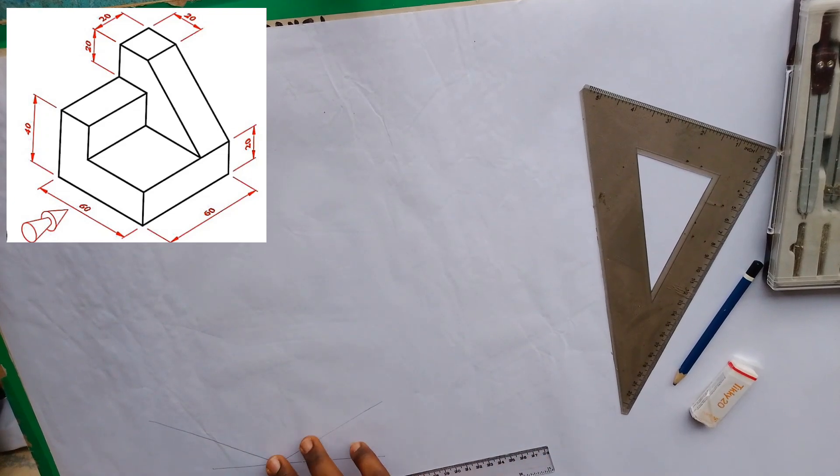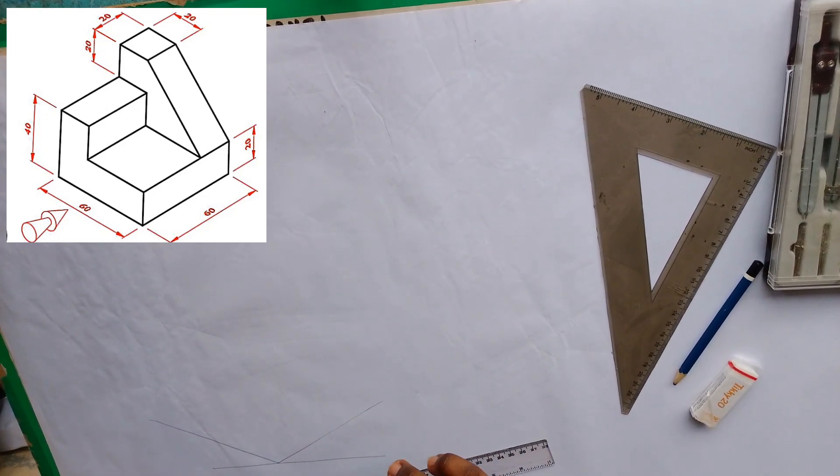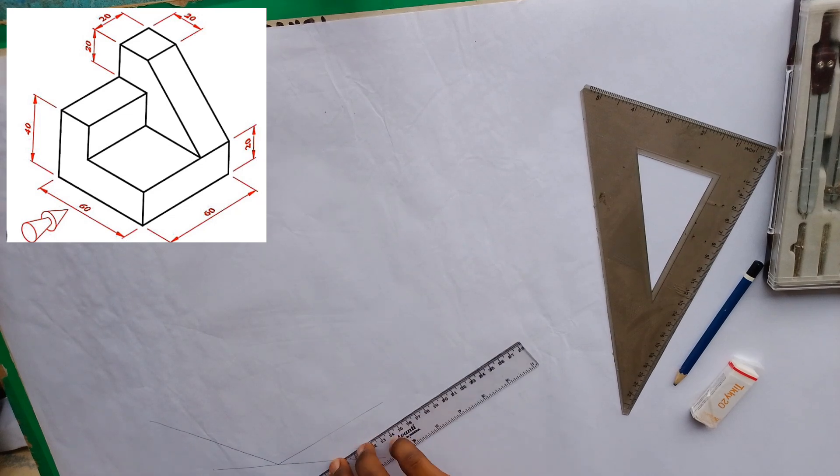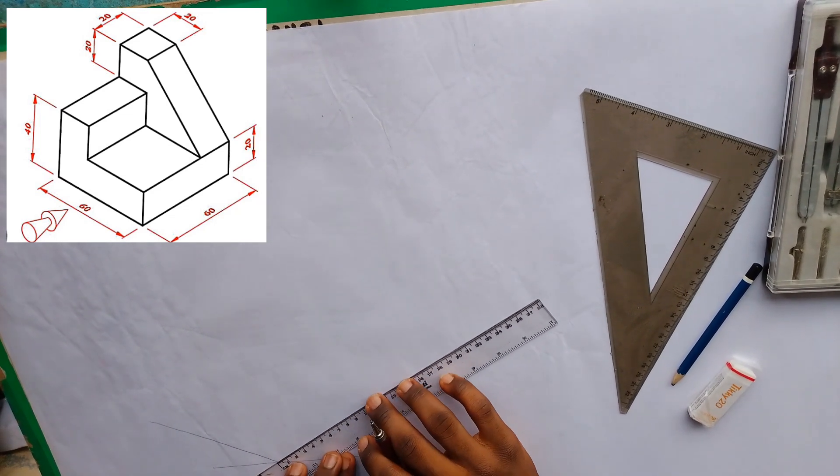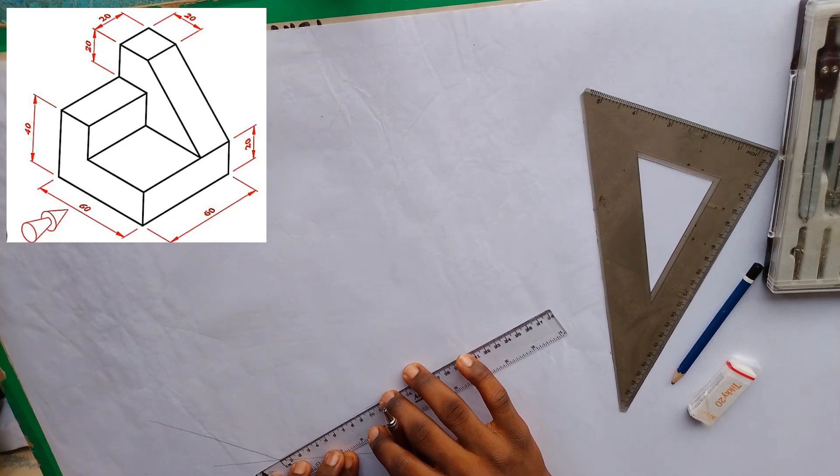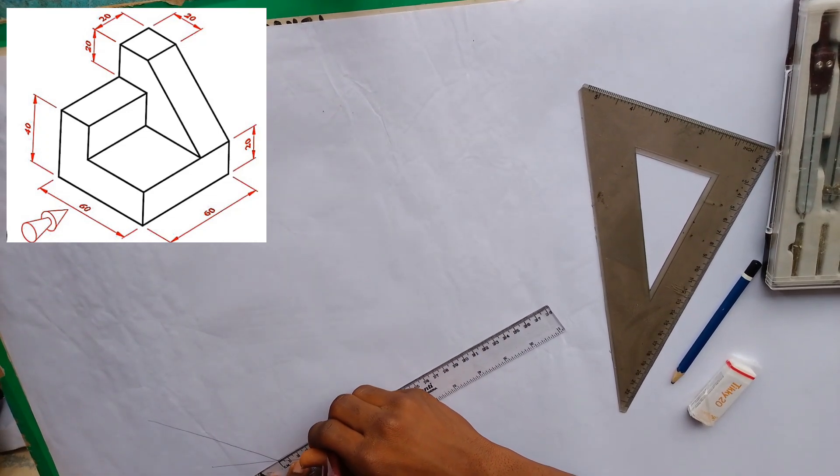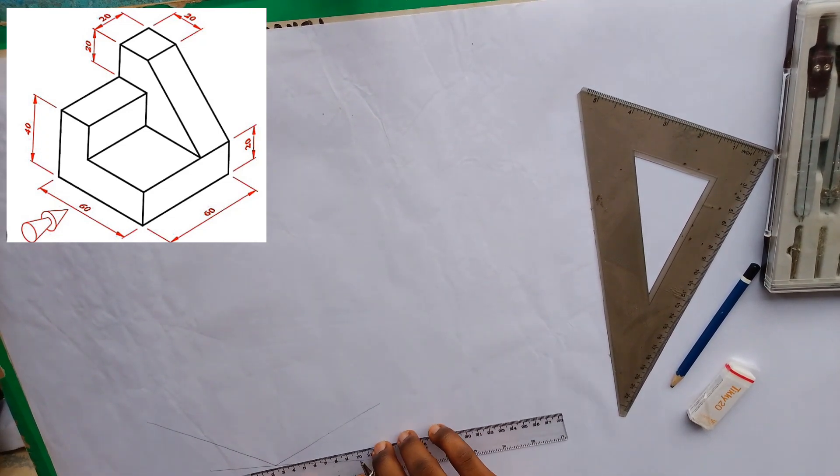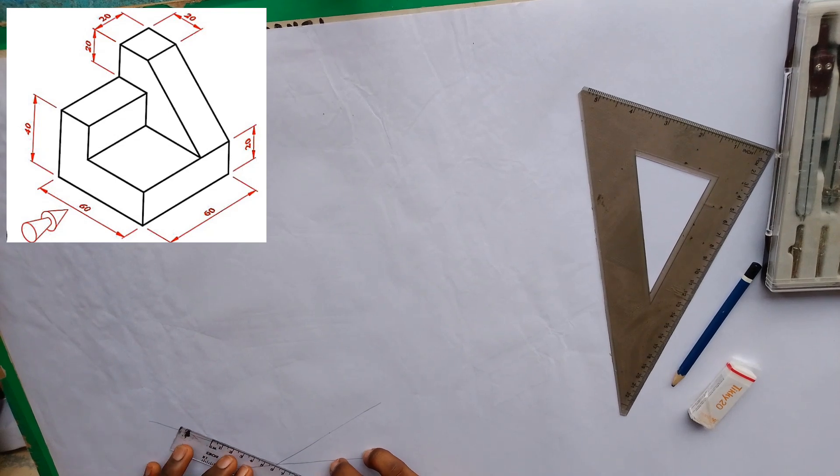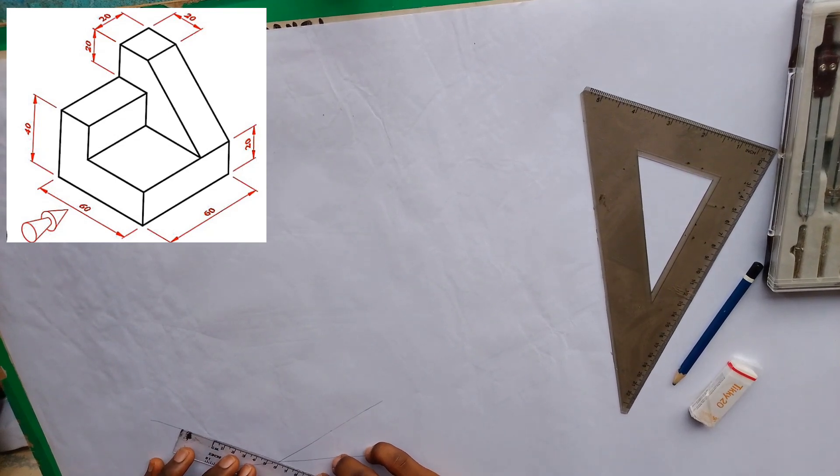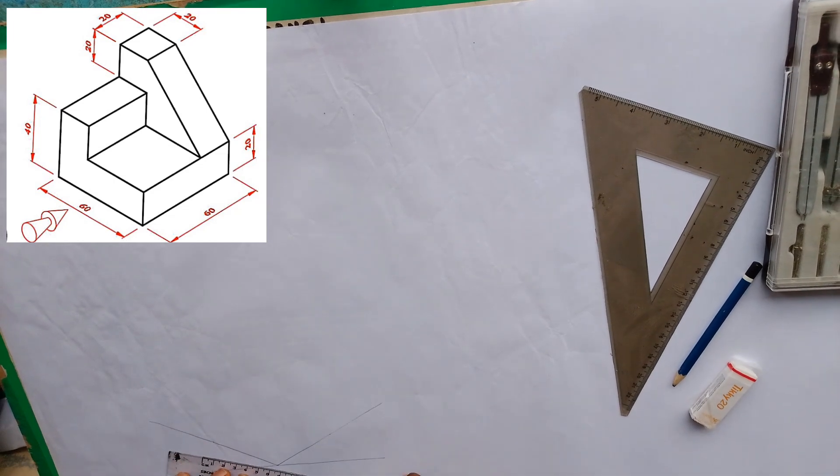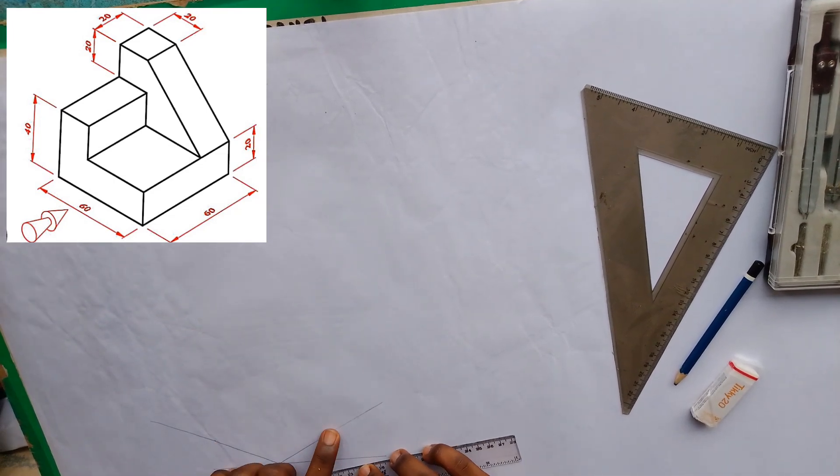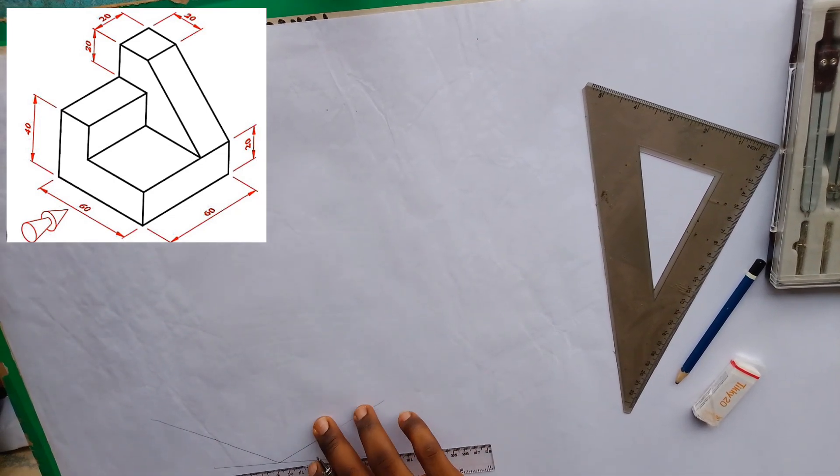These two lines are 30 degrees to the horizontal line. In our drawing, we see that from here to here is 60 millimeters. We'll mark that on the line. On the other side is the same. This other side is also the same, 60 millimeters this side.